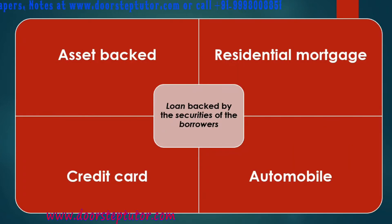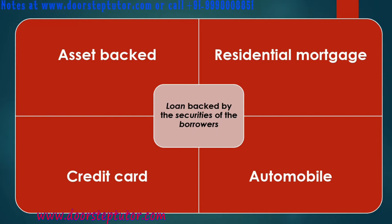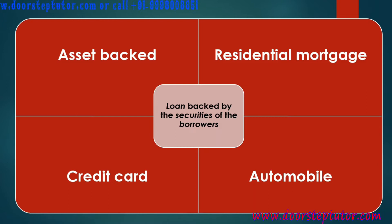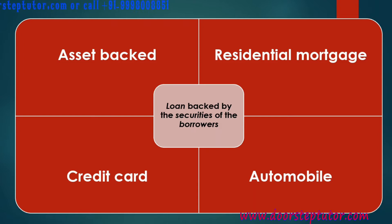Those illiquid assets are the securities held by the bank from borrowers. These are usually of four main types: asset-backed securities, residential mortgages, credit card, and automobile mortgages. There are many types but we consider these four main ones.